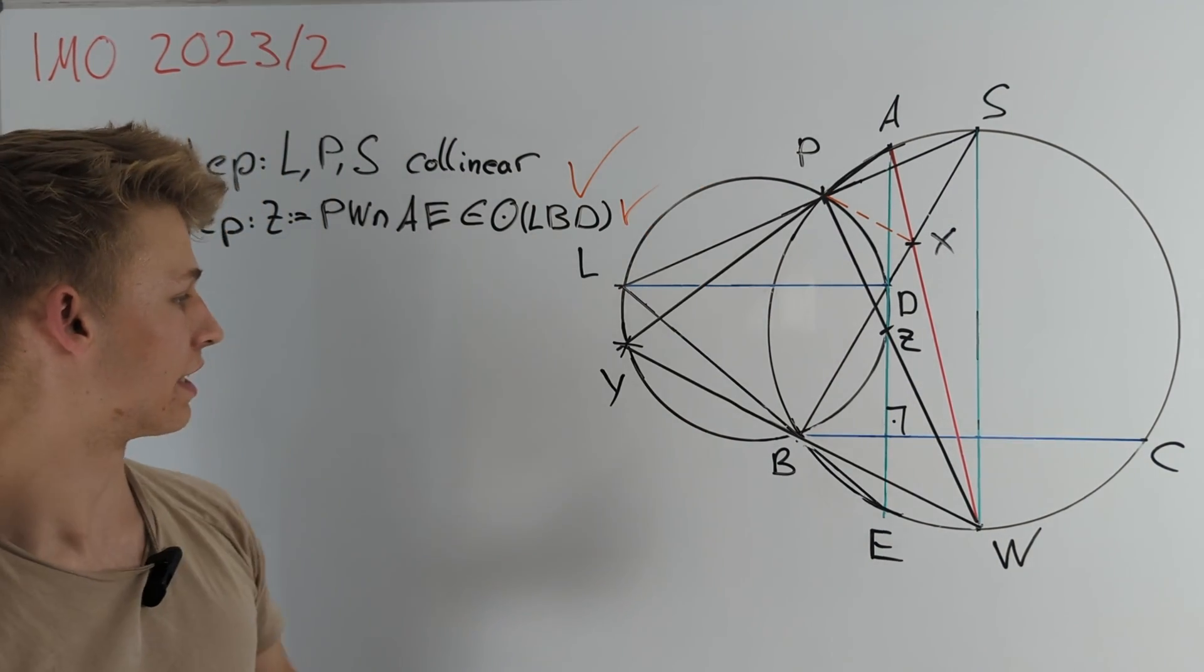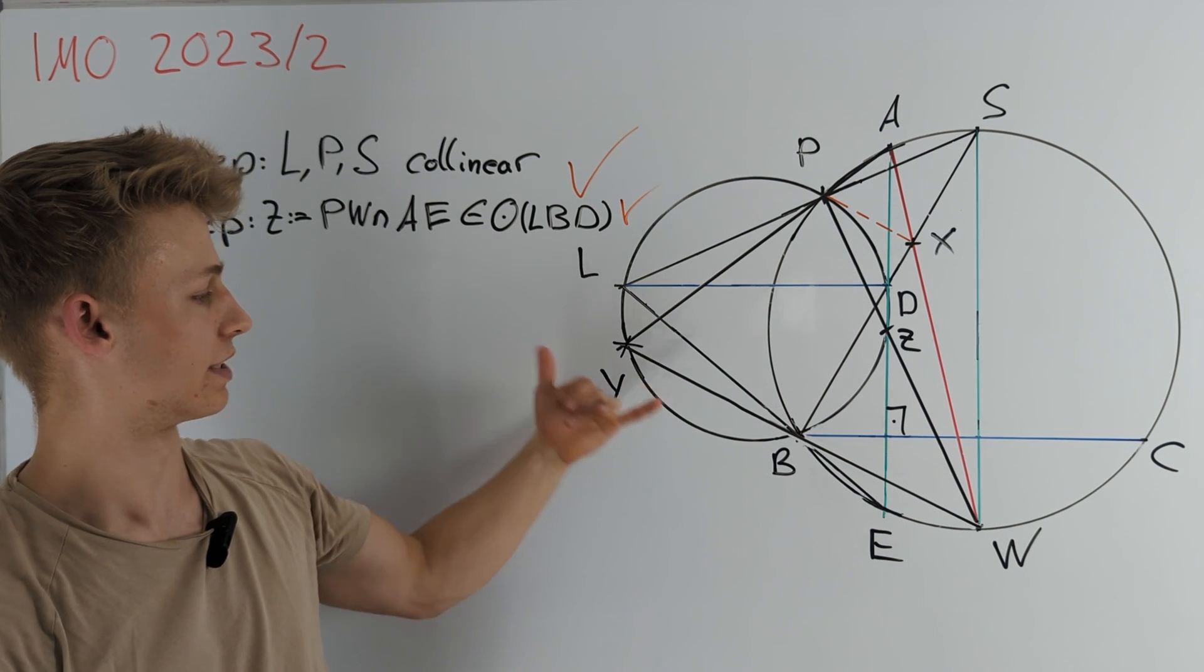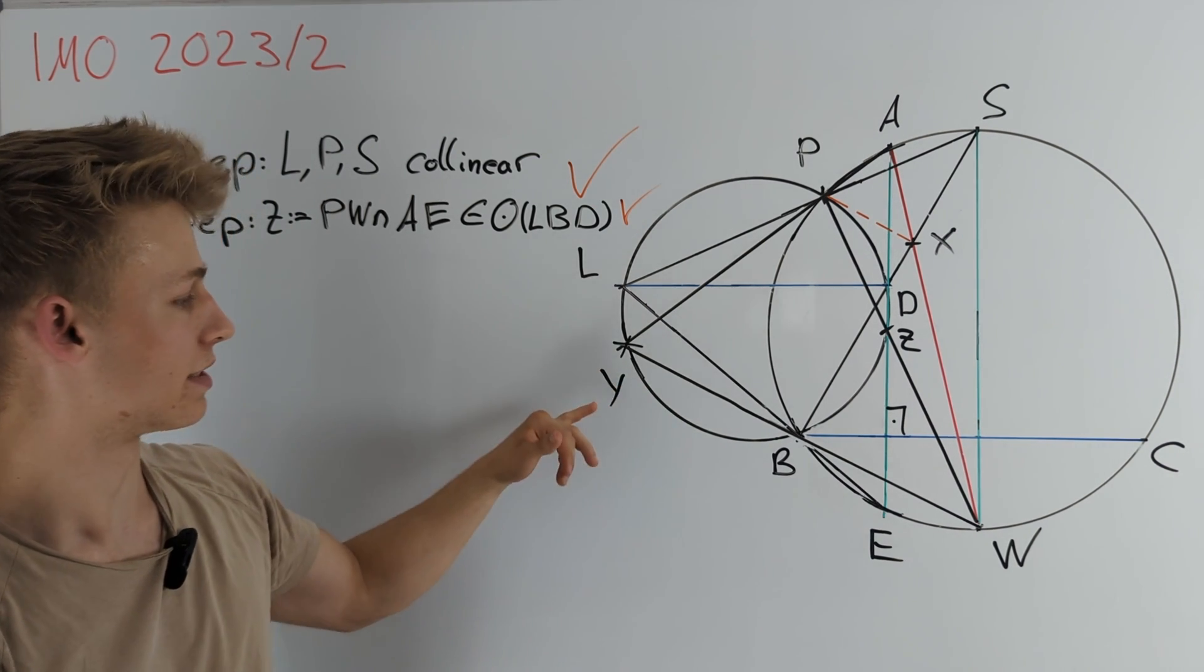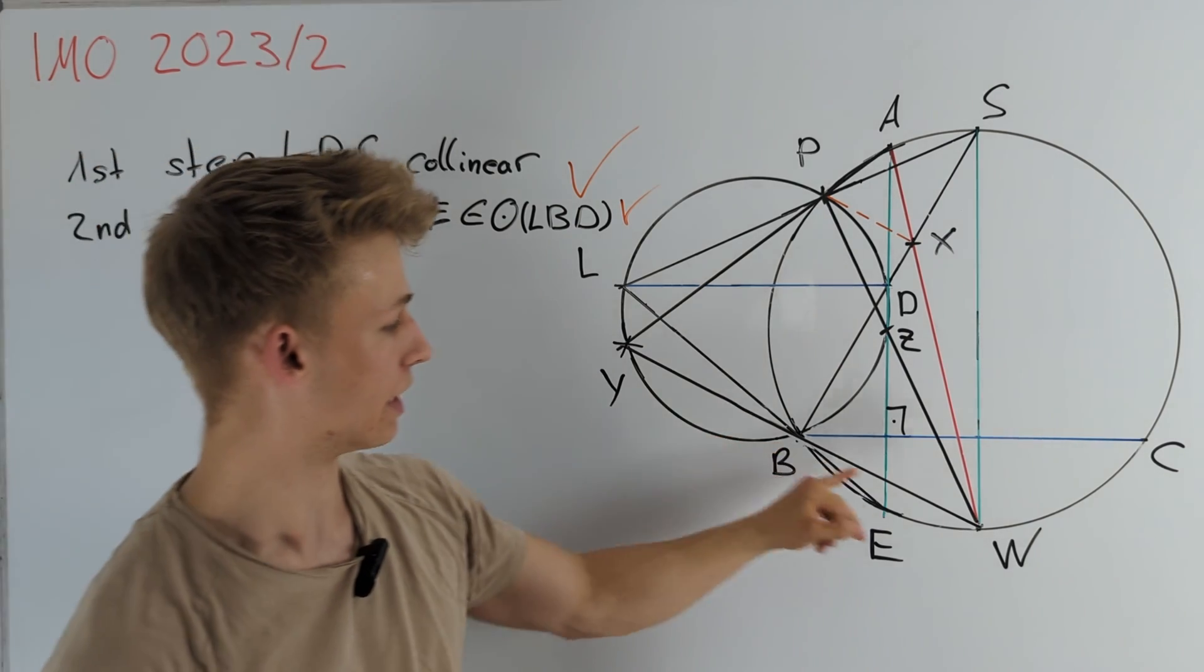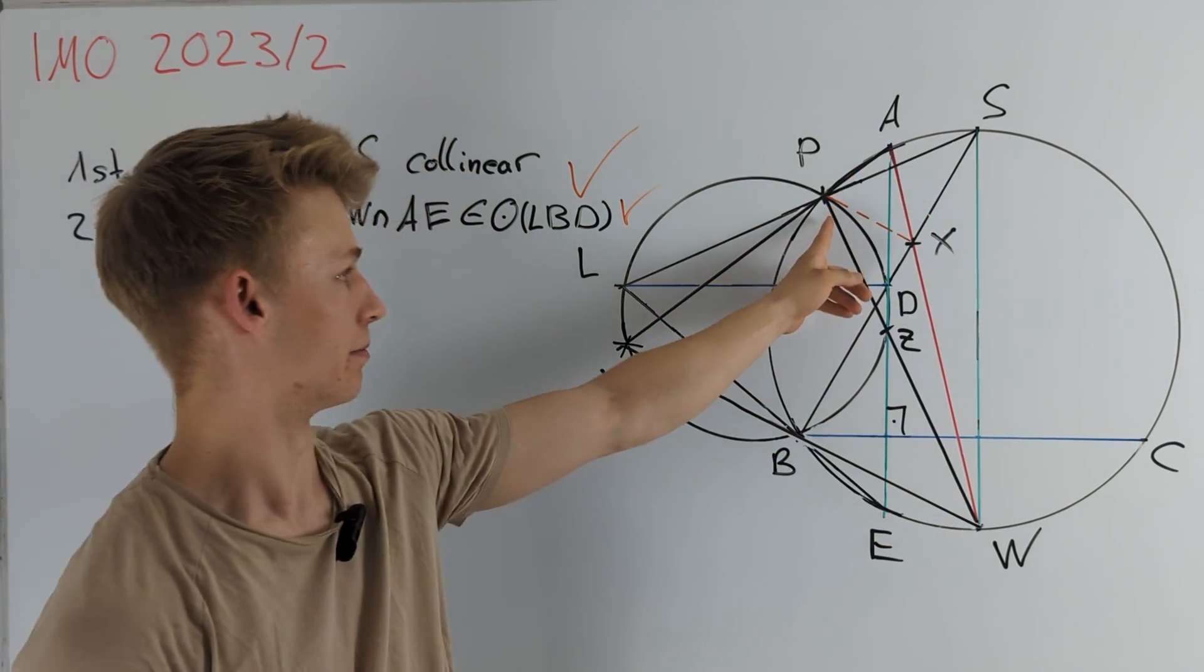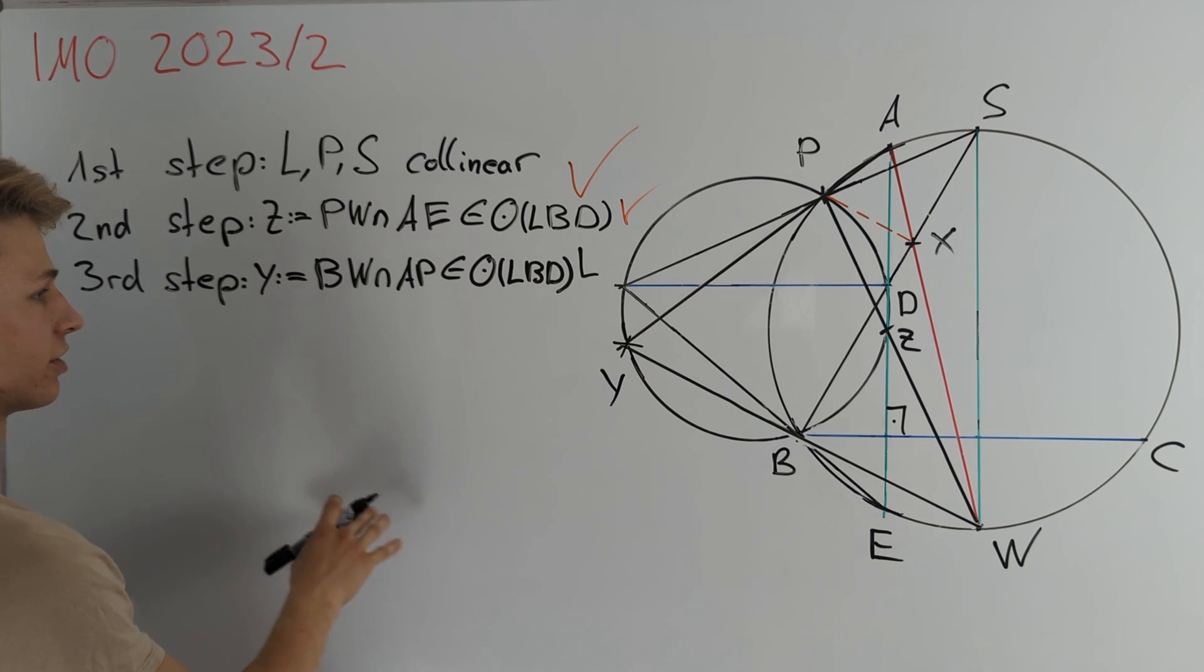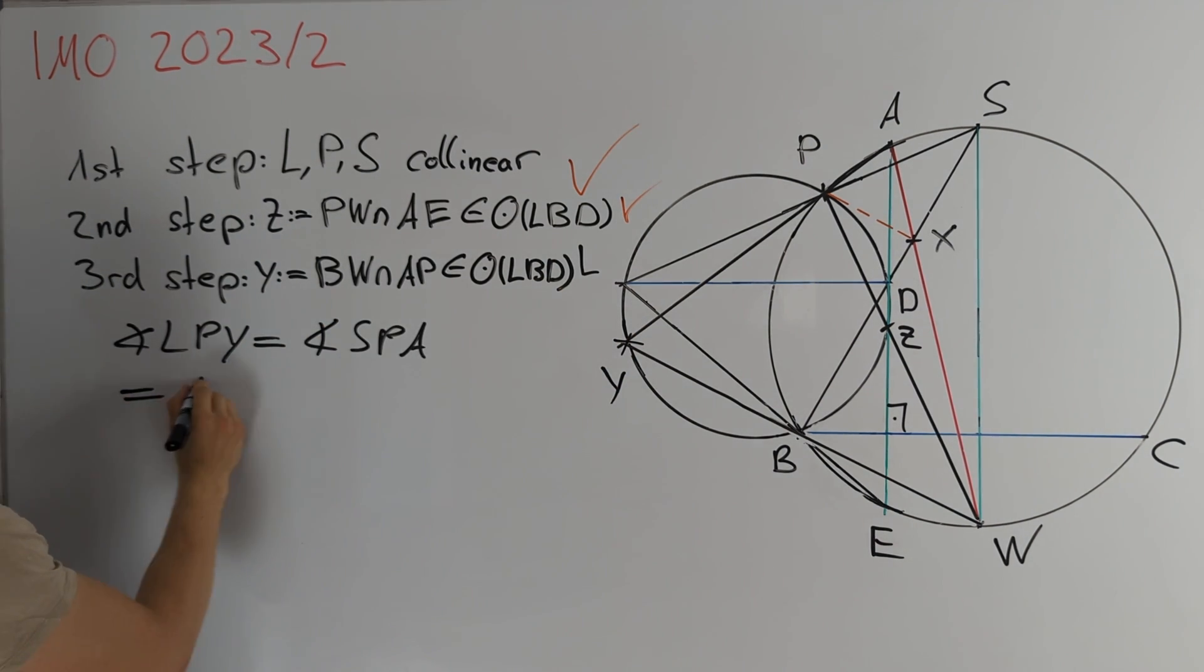In our third step we want to prove that another point Y lies on the same circle and here Y is defined as the intersection of BW and AP. We again prove this by only calculating angles. Namely, we have that the angle LPY is equal to the angle SPA which is equal to the angle SWA.